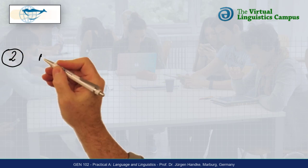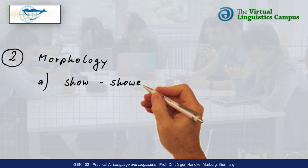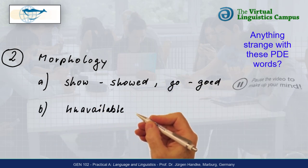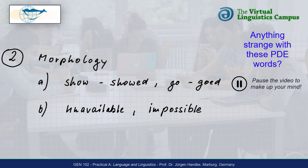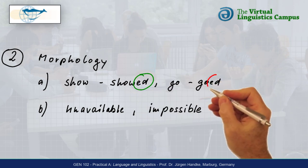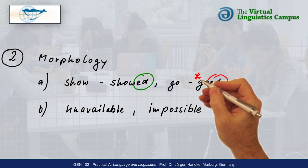Here's a morphological phenomenon. Look at these two sets of present-day English words and make up your minds what is going on here. Well, the pairs show and showed and go and goad show that the past tense rule — verb plus ed — has been overgeneralized, leading to the ungrammatical form goad. Actually, children come up with such forms at a stage when they consider the basic inflectional rules exceptionless.